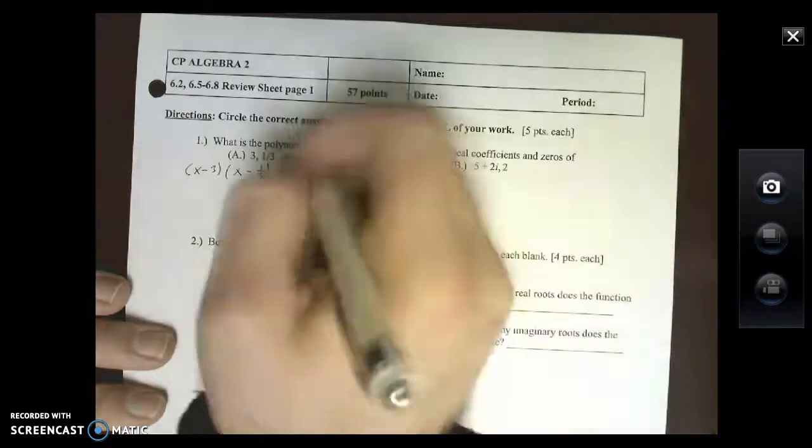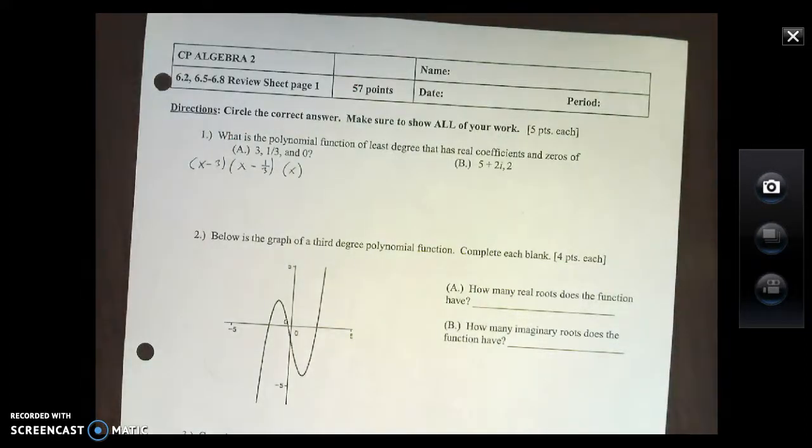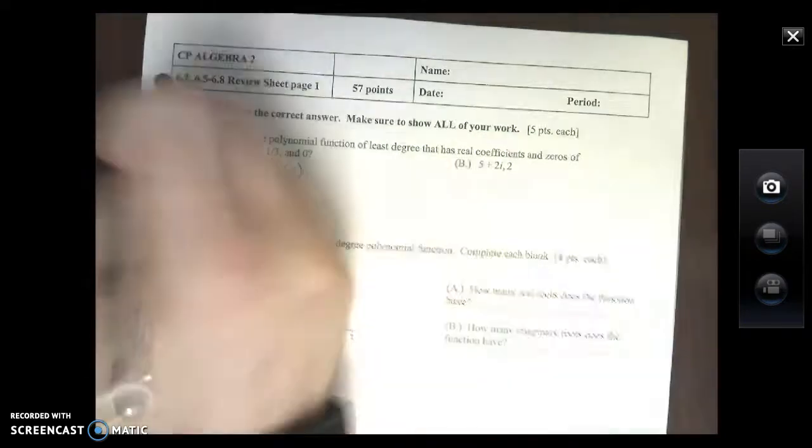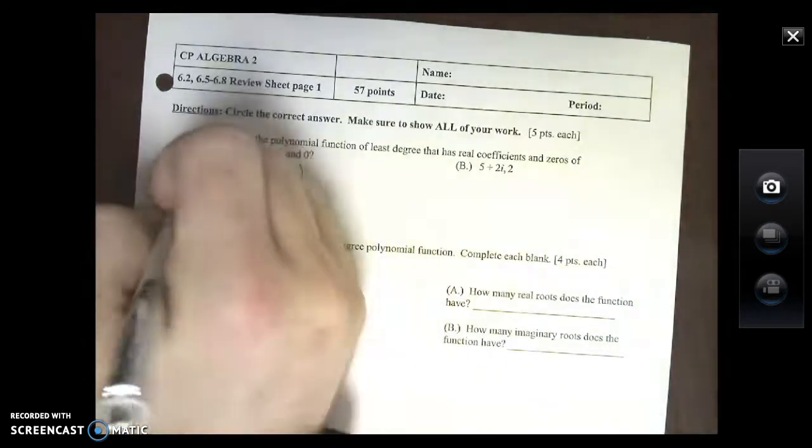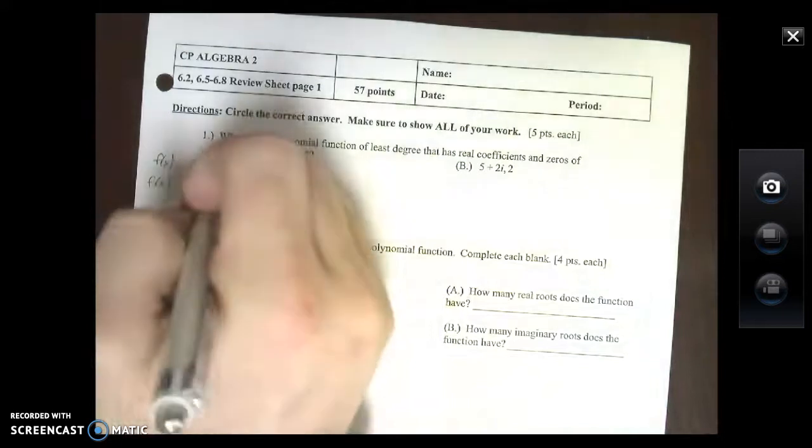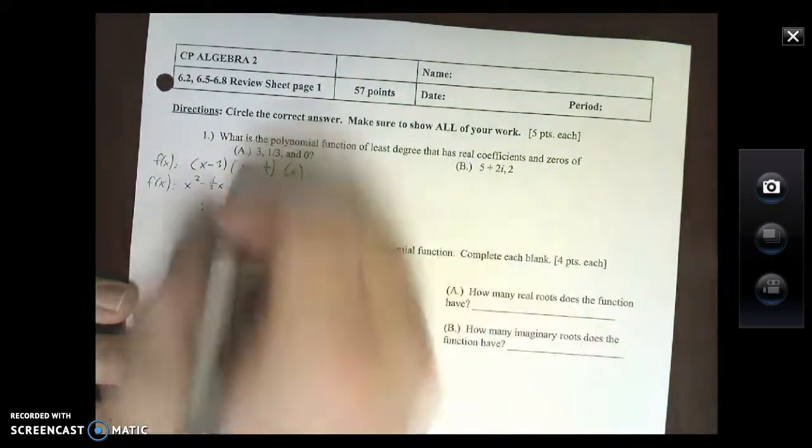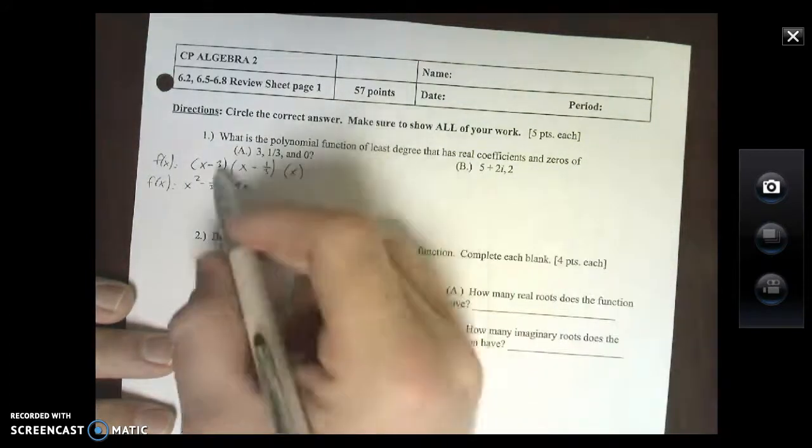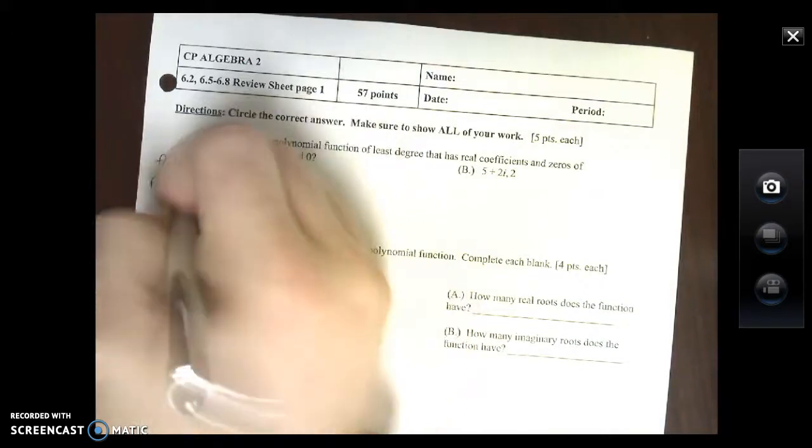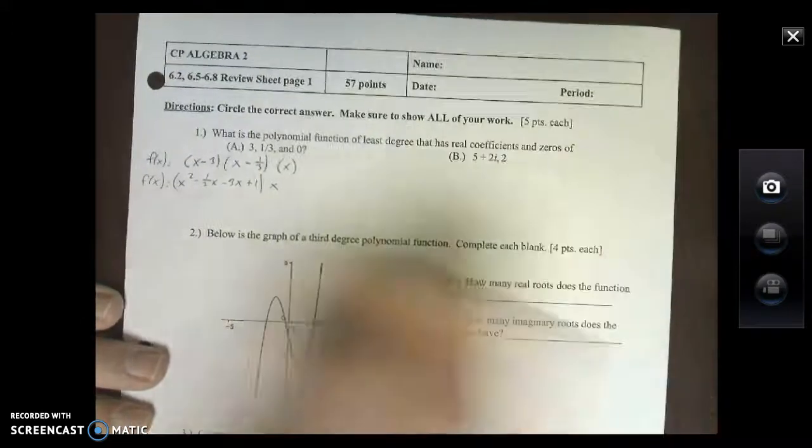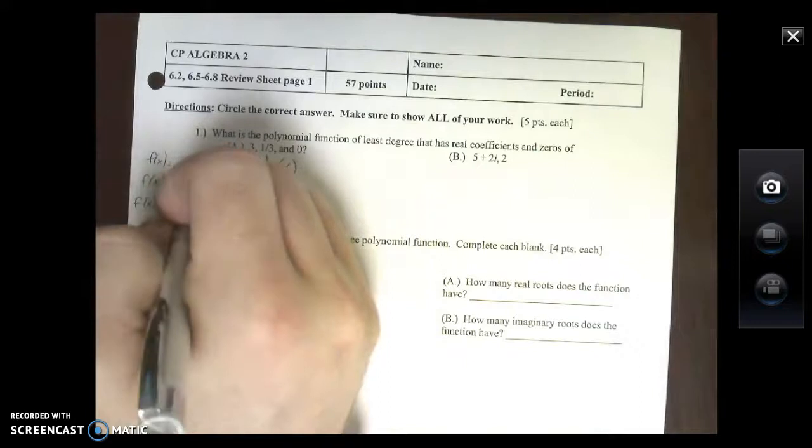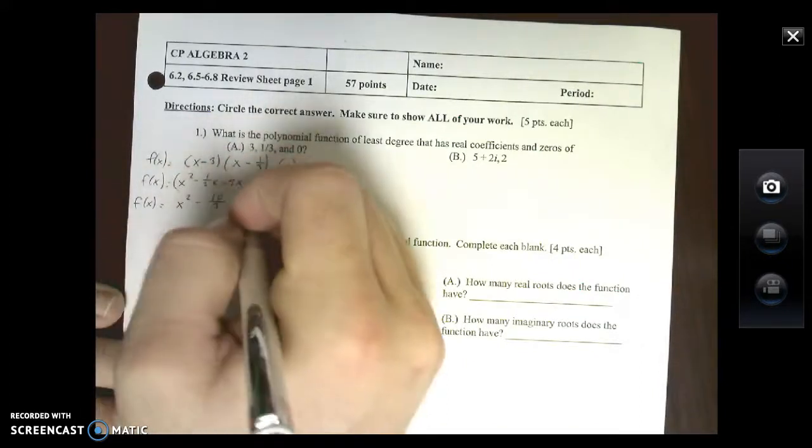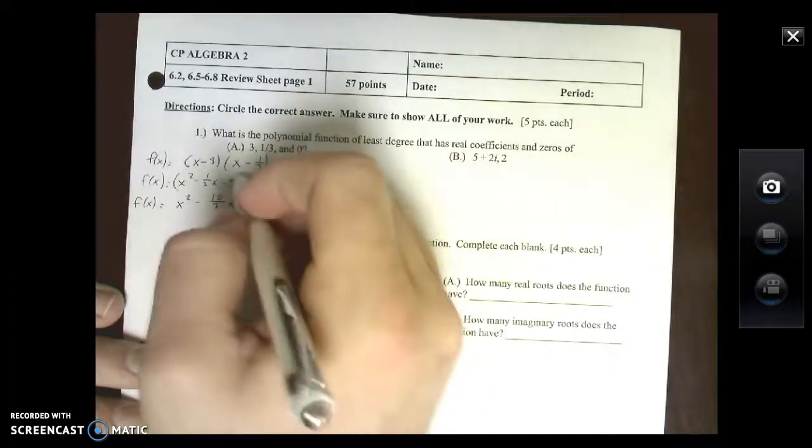Now if you take a look at this, we're just multiplying things out, foiling this out. For the first part, if I foil this, X times X gives me X squared, X times negative 1/3 is negative 1/3 X, negative 3 times X is negative 3X, and then negative 3 times negative 1/3 is plus 1. Now looking inside here, negative 1/3 minus 3 gives me X squared minus 10/3 X plus 1.